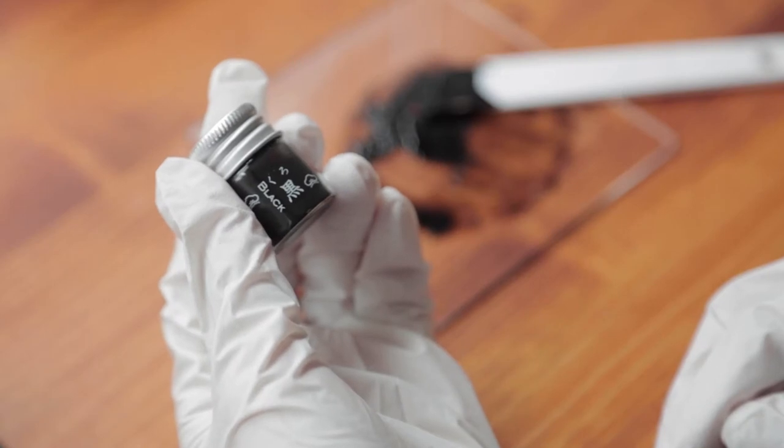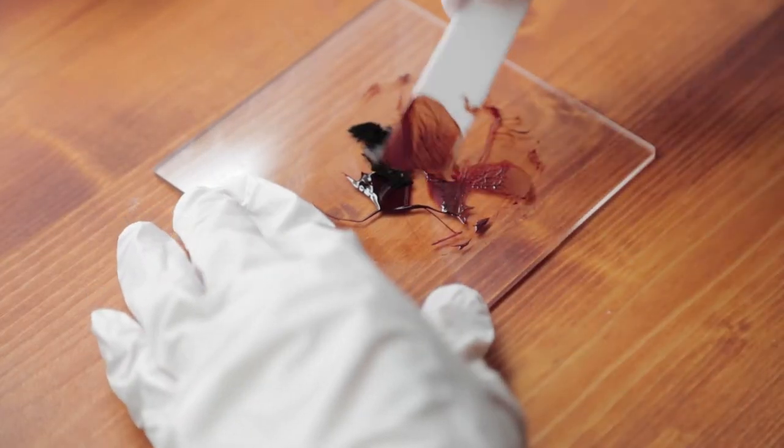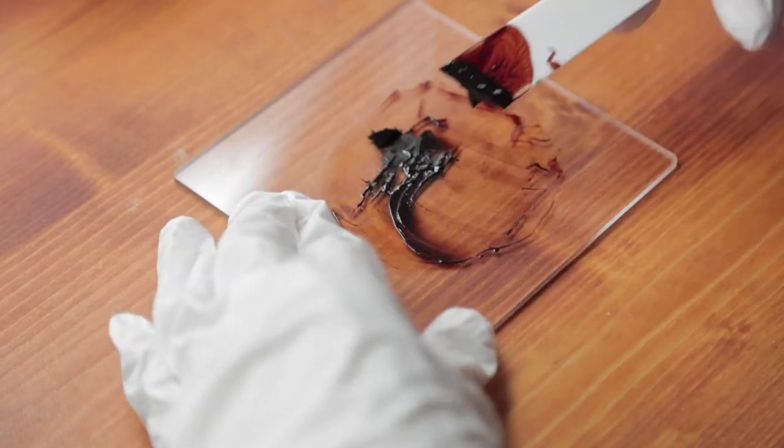The amount of black powder added should be less than that of the raw urushi. Mix together with the spatula.